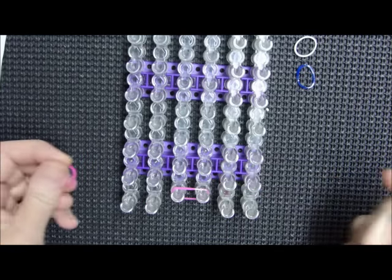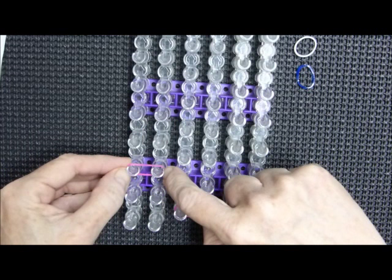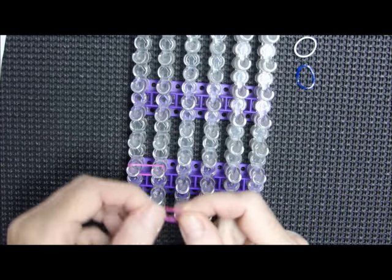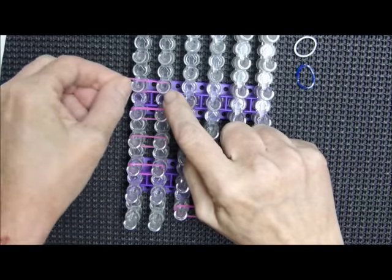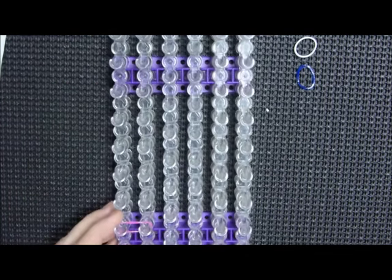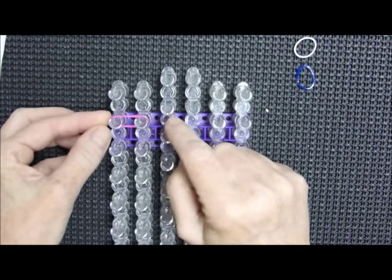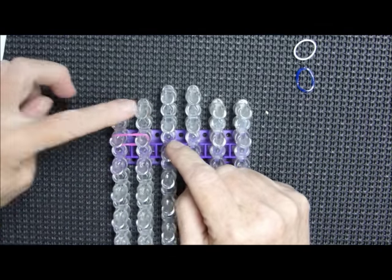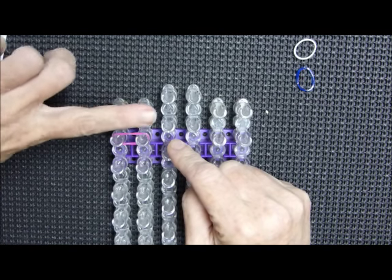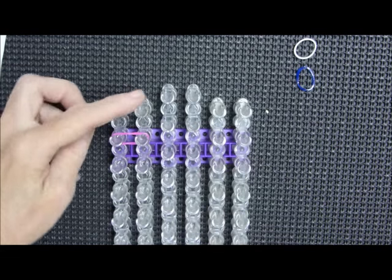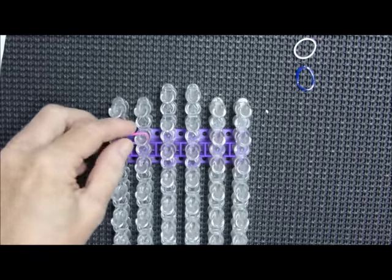We're going to place one across like this for the closure band. Then we're going to go one, two, third one up and place some bands like this. If you go to the end of your loom, this will be the last one you place. You'll be leaving one set of these below. Does that make sense?